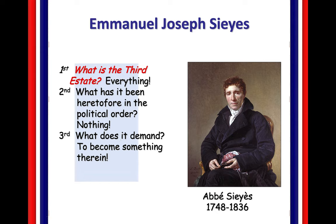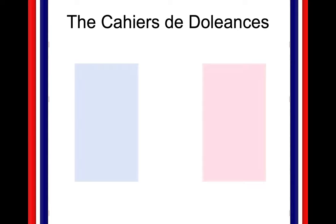Sieyès — and we'll see him again when we talk about Napoleon, so don't forget him — is arguing that the third estate has never been recognized, doesn't have a lot of privilege or power. What does it want? It wants to have some say within the government. The third estate sees the first two estates trying to disenfranchise them and make sure they don't get any political power, and they are not happy about this.